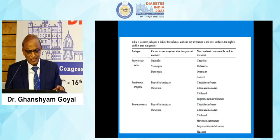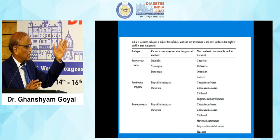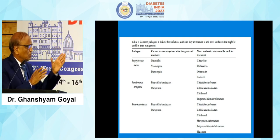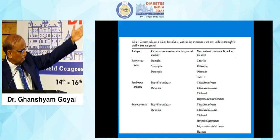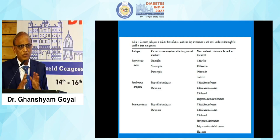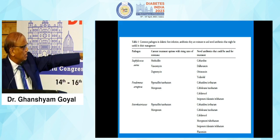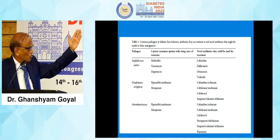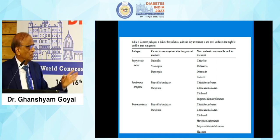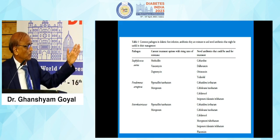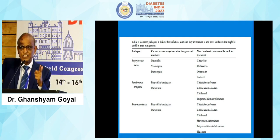This is important and new — the latest guidelines suggest the use of newer antibiotics. However, remember that most of these newer antibiotics I am about to show are not available in our country. Always remember the three key organisms: Staph aureus, Pseudomonas, and Enterobacteriaceae. Current treatment options are becoming limited with rising rates of resistance due to inappropriate antibiotic use, as we were discussing during the foot group meeting.